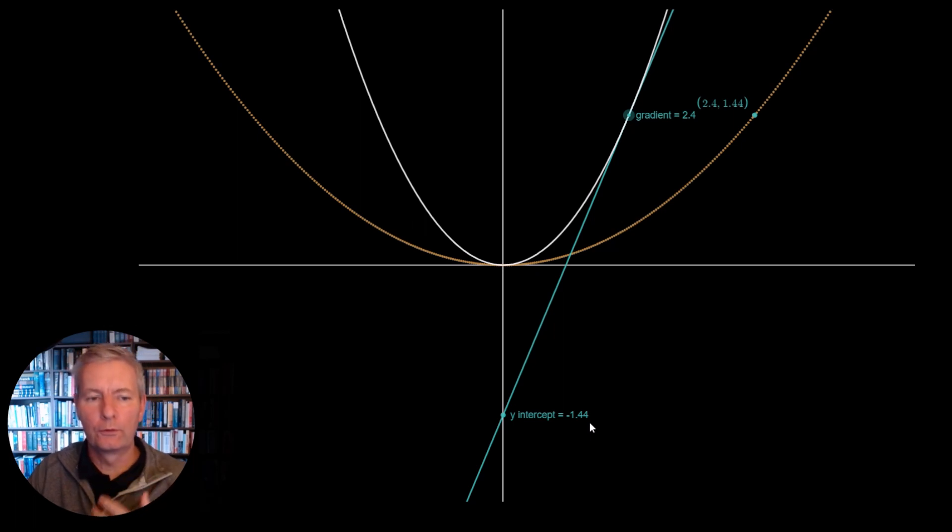Now in order to draw the Legendre Transform for this single point, what we do is we take the gradient, which is 2.4. The gradient becomes the x-component of the Legendre Transform. And the y-intercept here, which is minus 1.44, becomes the y-value for the Legendre Transform.